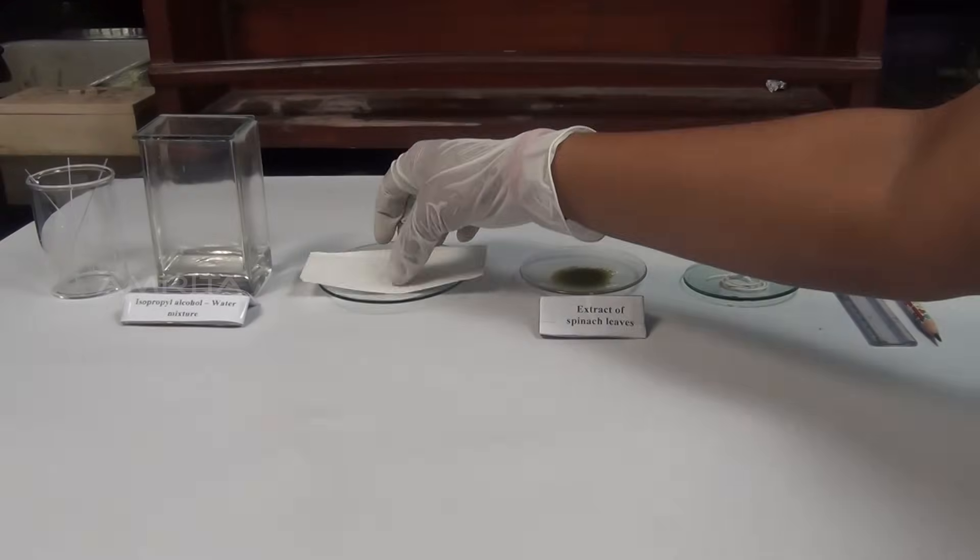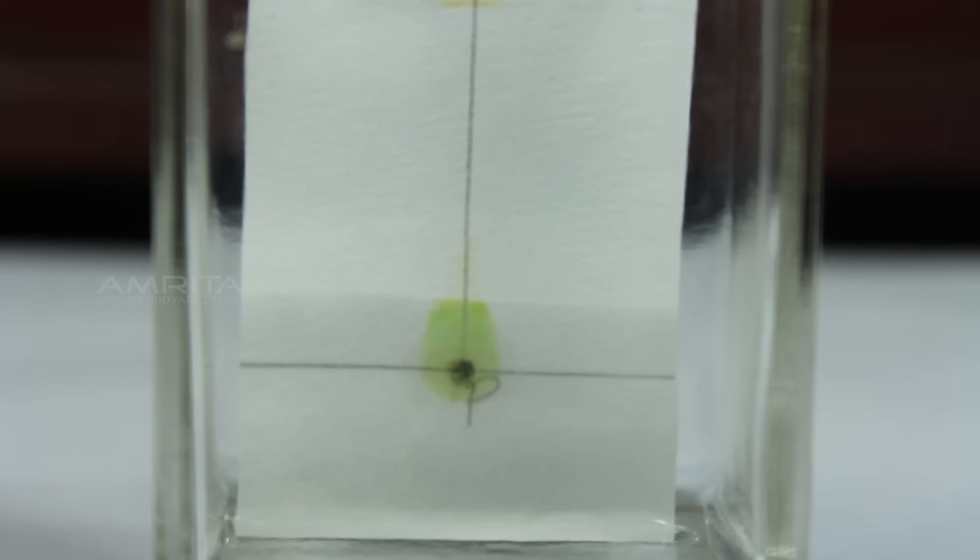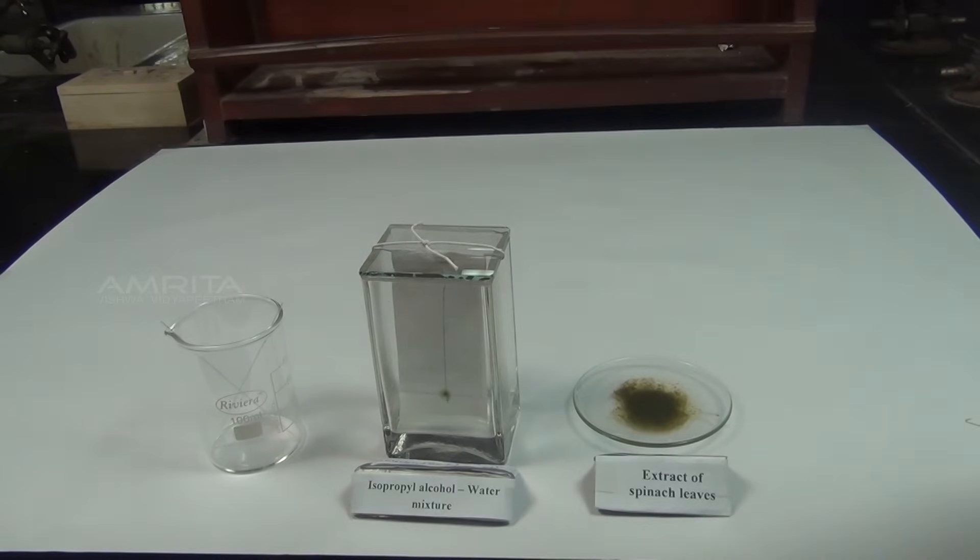The stationary phase is usually a piece of high-quality filter paper. The mobile phase is a developing solution that travels up the stationary phase, carrying the samples with it. When the mobile phase is moved over the sample on the stationary phase, the components of the sample get gradually separated from one another.